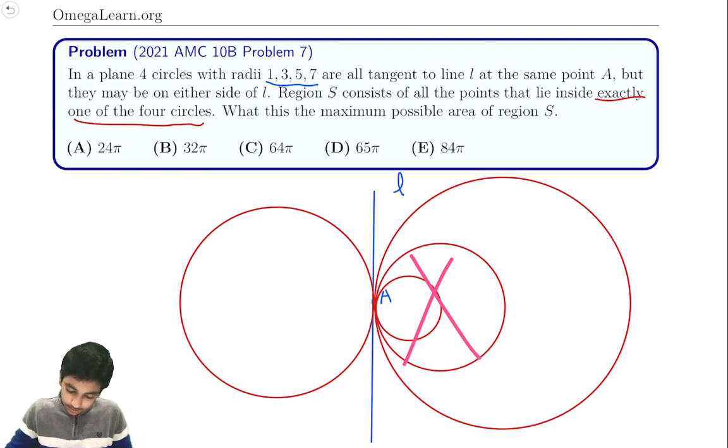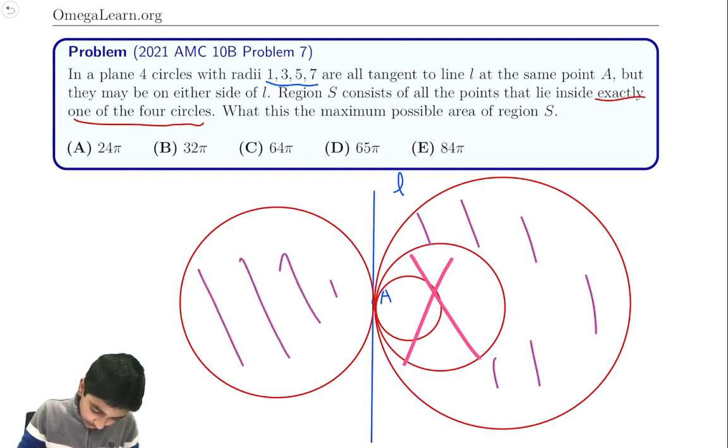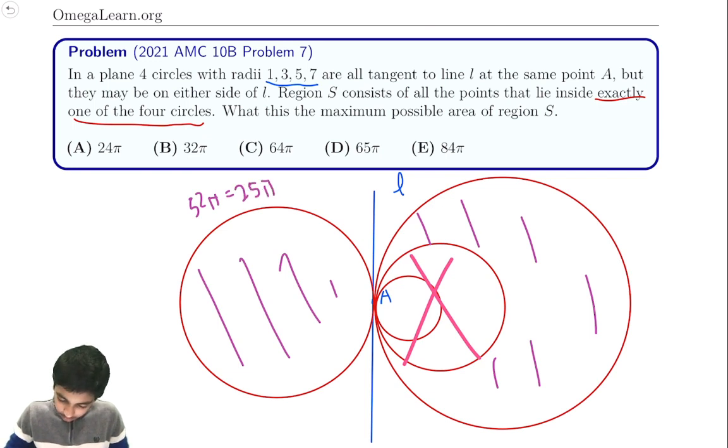Therefore, we can see the area, this region, plus this region, is just going to be equal to 5 squared π, which is 25π. And this is just going to be 7 squared minus 3 squared π, which is 40π. So the area is 65π. And that is the solution for this problem.